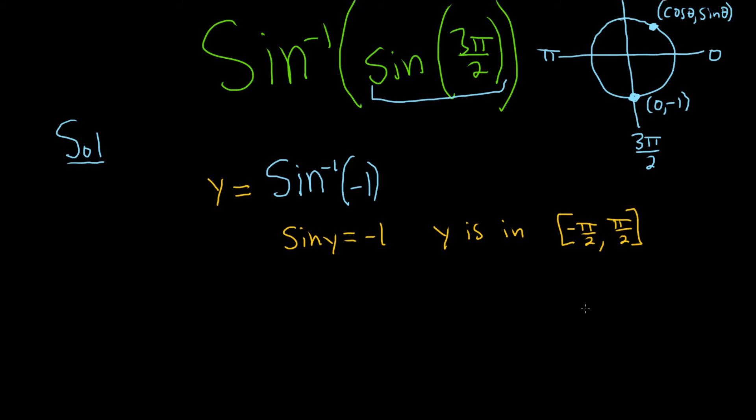Now we're looking for the value of y such that the sine of y is equal to negative 1 in this range. Well, that would be negative π over 2.